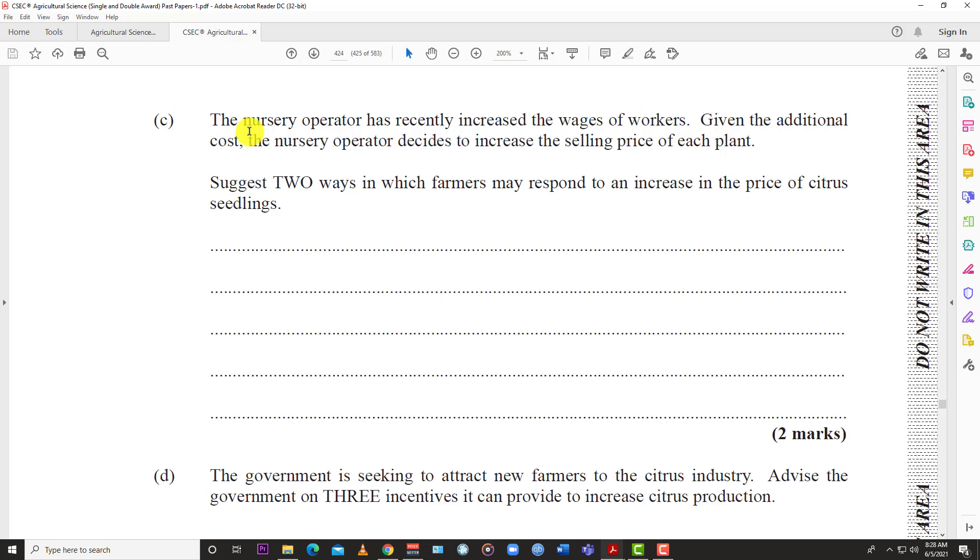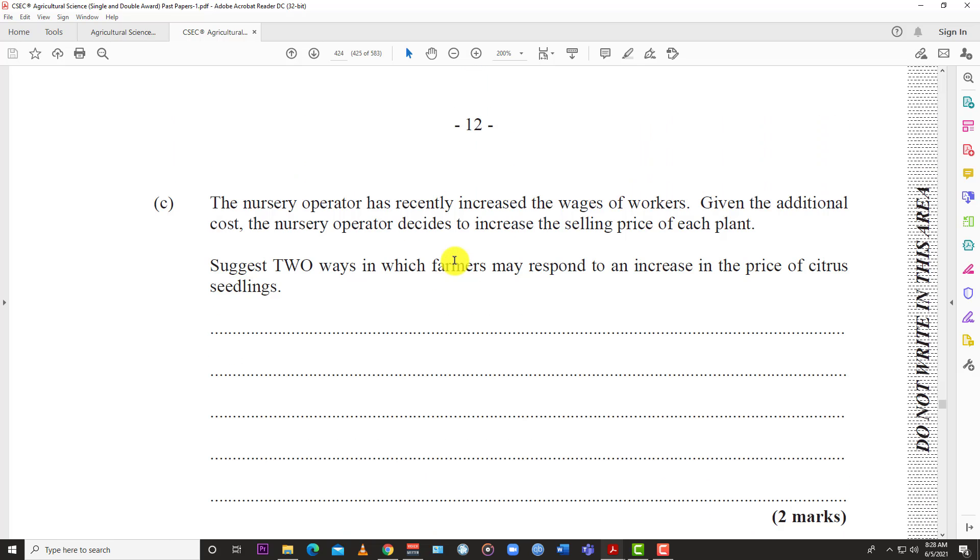The nursery operator has recently increased the wages of workers. Given the additional costs, the nursery operator decides to increase the selling price of each plant. So there's two ways in which farmers may respond to an increase in price of citrus seedling. Very easy. What you might do now is plant something else, plant something else as opposed to citrus.